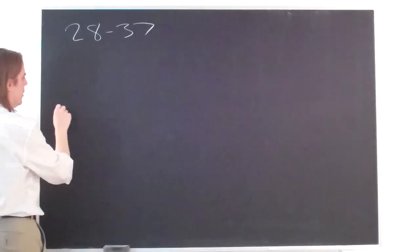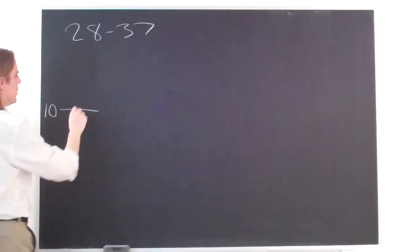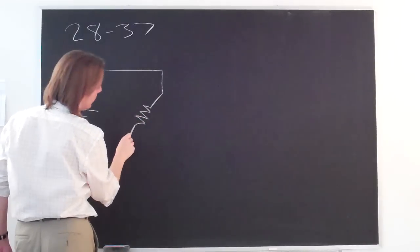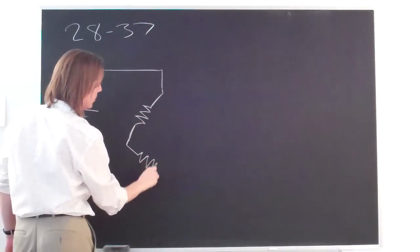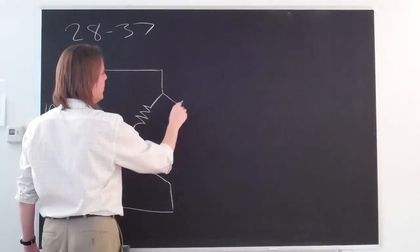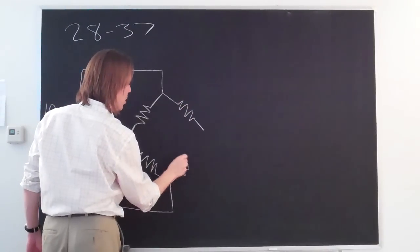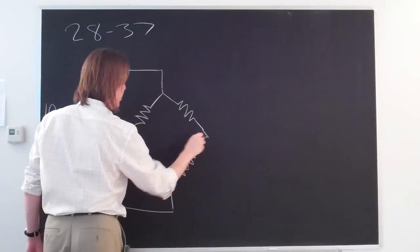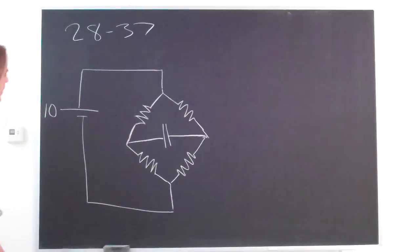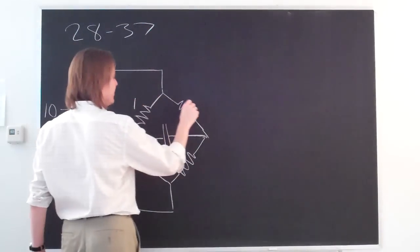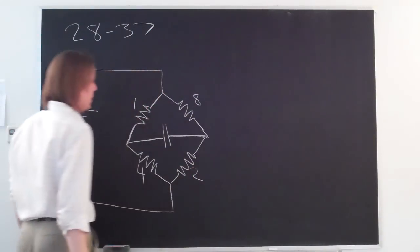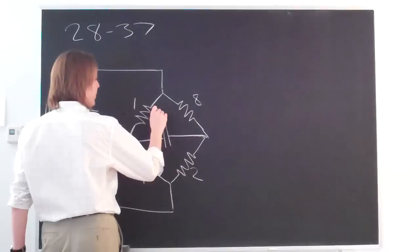This slightly complicated-looking circuit has 10 volts and comes down to a diamond-shaped arrangement. There are more diamonds in the network, and right across the middle is a capacitor. The resistances are 1, 8, 4, and 2 ohms, and the capacitor is 1 microfarad.